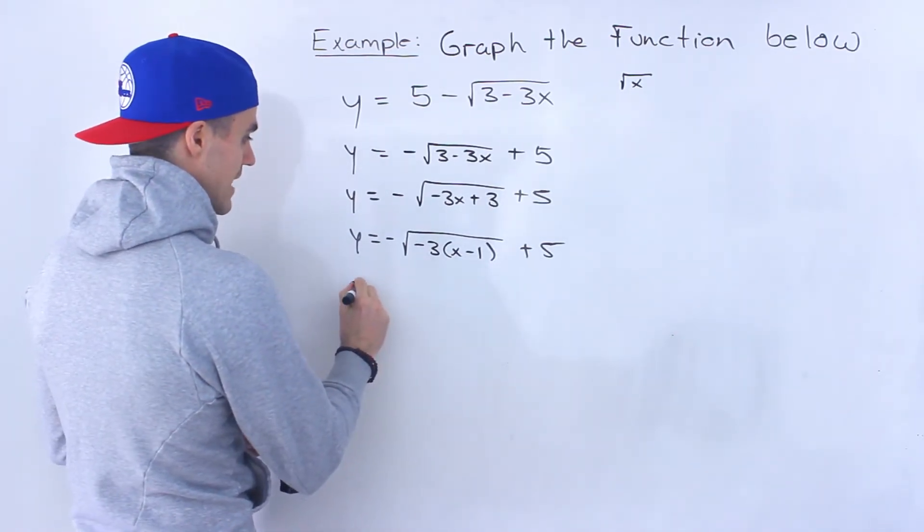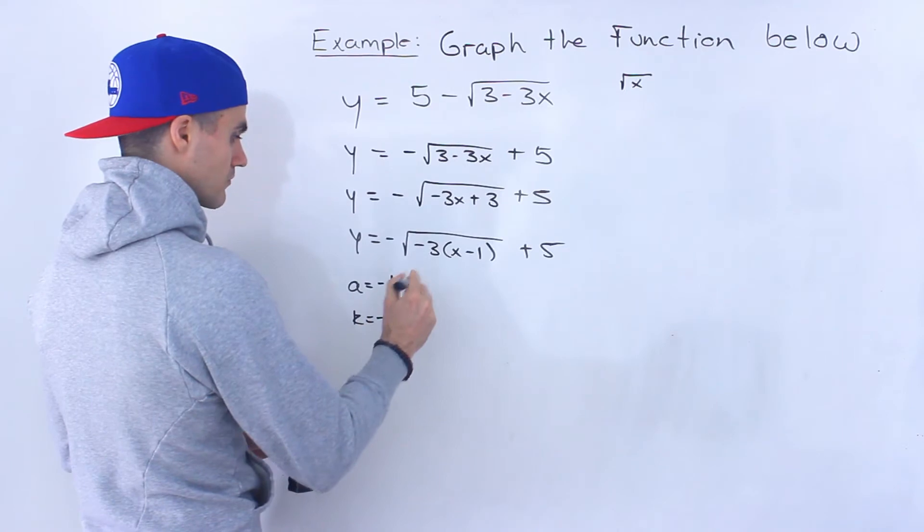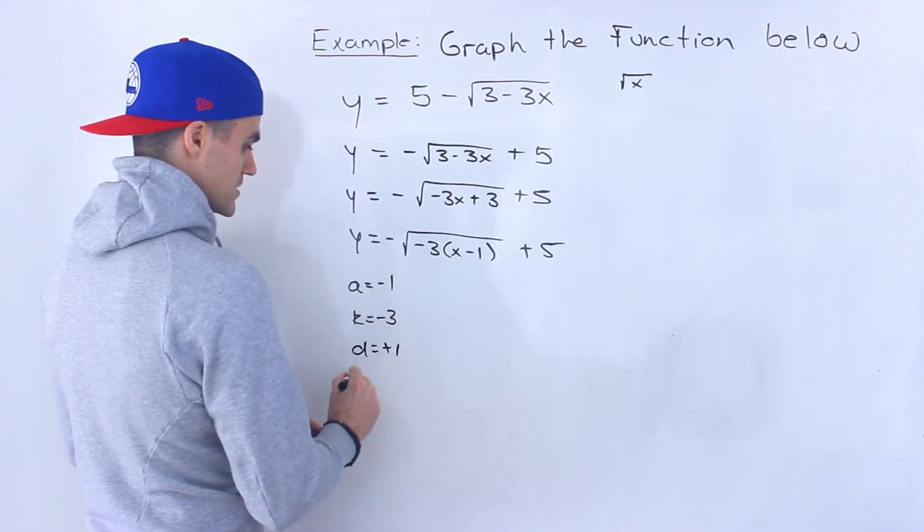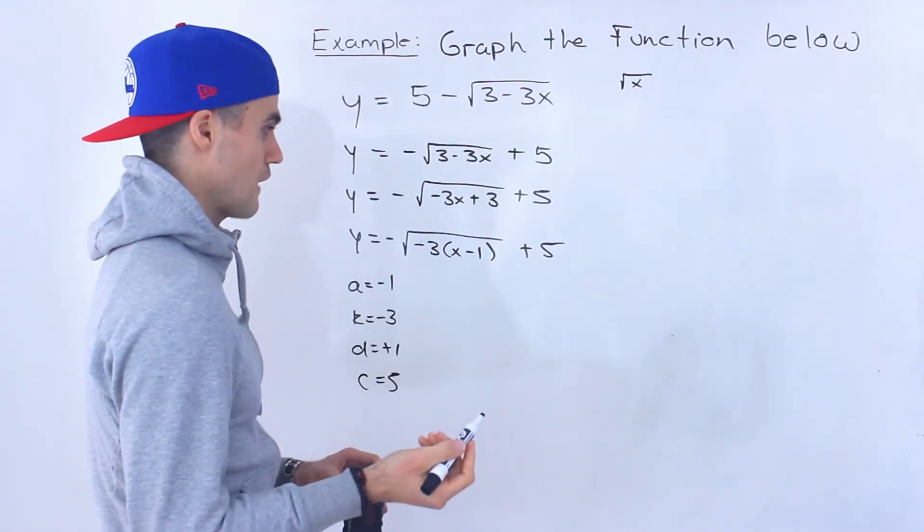So we could tell, notice that the a value is negative 1, the k value is negative 3, the d value is positive 1 (remember it's the opposite sign), and then the c value is positive 5.